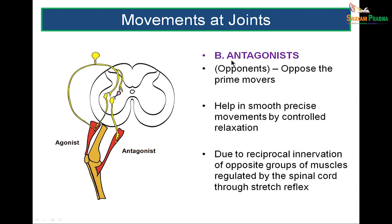An antagonist opposes the prime mover. It is required to prevent jerky movements and enables smooth, precise movements by controlled relaxation of the antagonistic muscles. The agonist and antagonist have common innervation, and this common feedback allows proper coordination between them for smooth joint control.